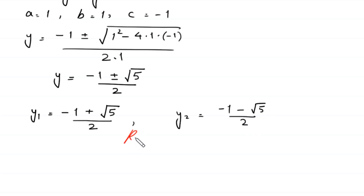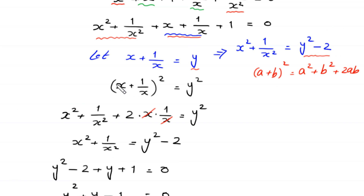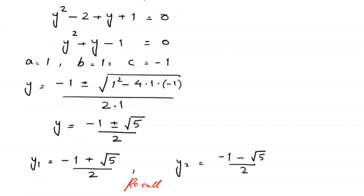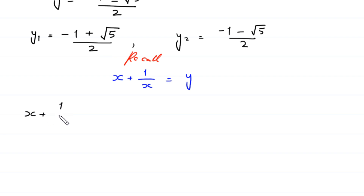Now recall that we supposed x plus 1 over x equals y. To find the values of x, we first substitute y₁, which is (negative 1 plus square root of 5) over 2. So x plus 1 over x equals (negative 1 plus square root of 5) over 2.